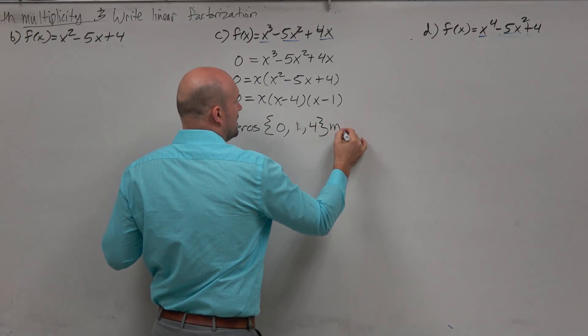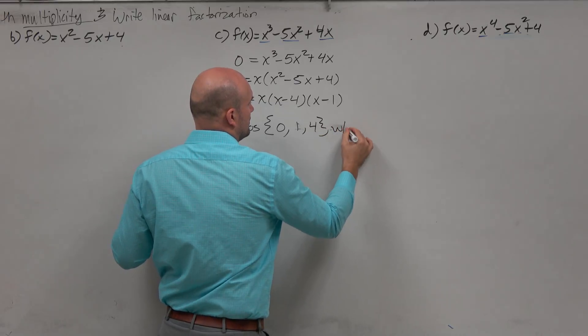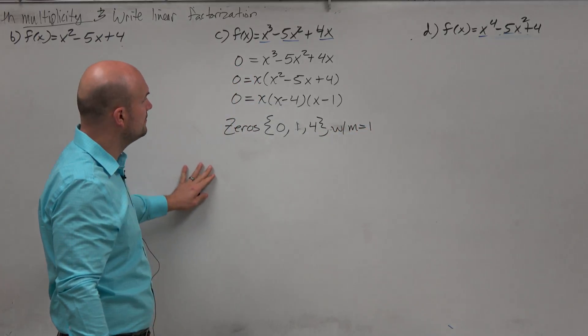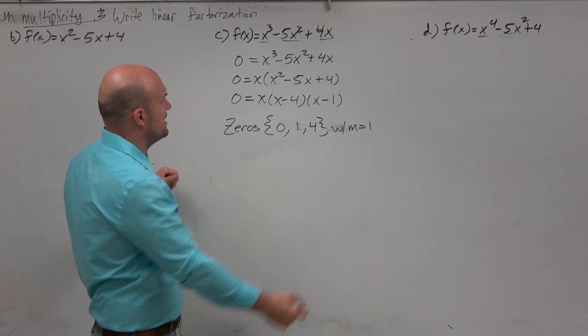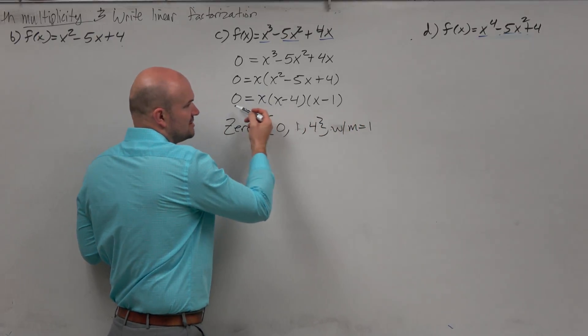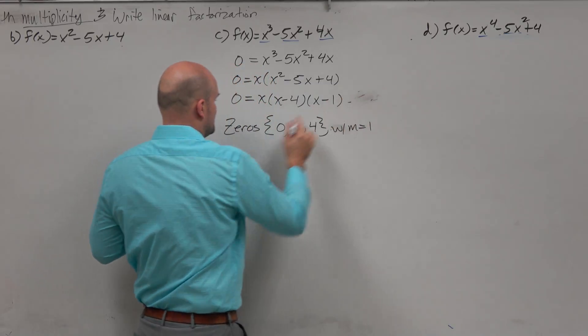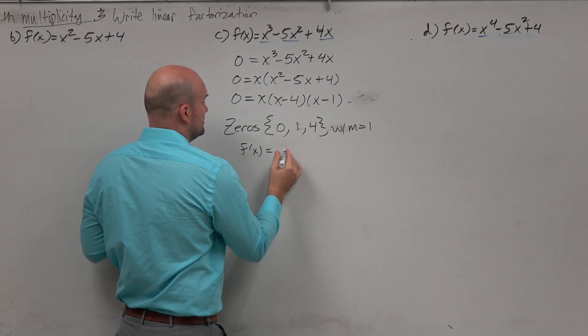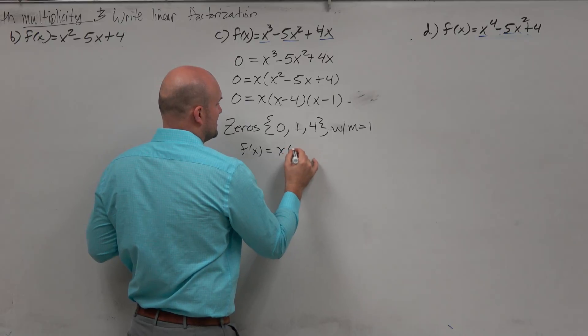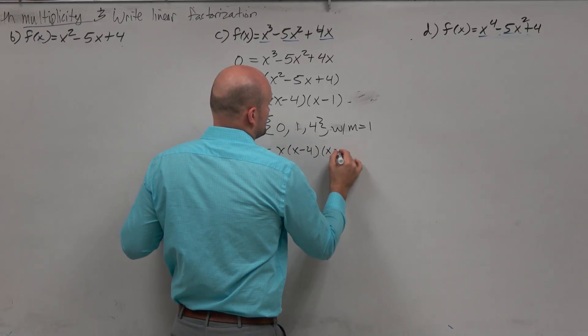And these all have a multiplicity equal to 1. And obviously, I rewrote it as a product of my linear factorization, which I can also just rewrite as x times x minus 4 times x minus 1.